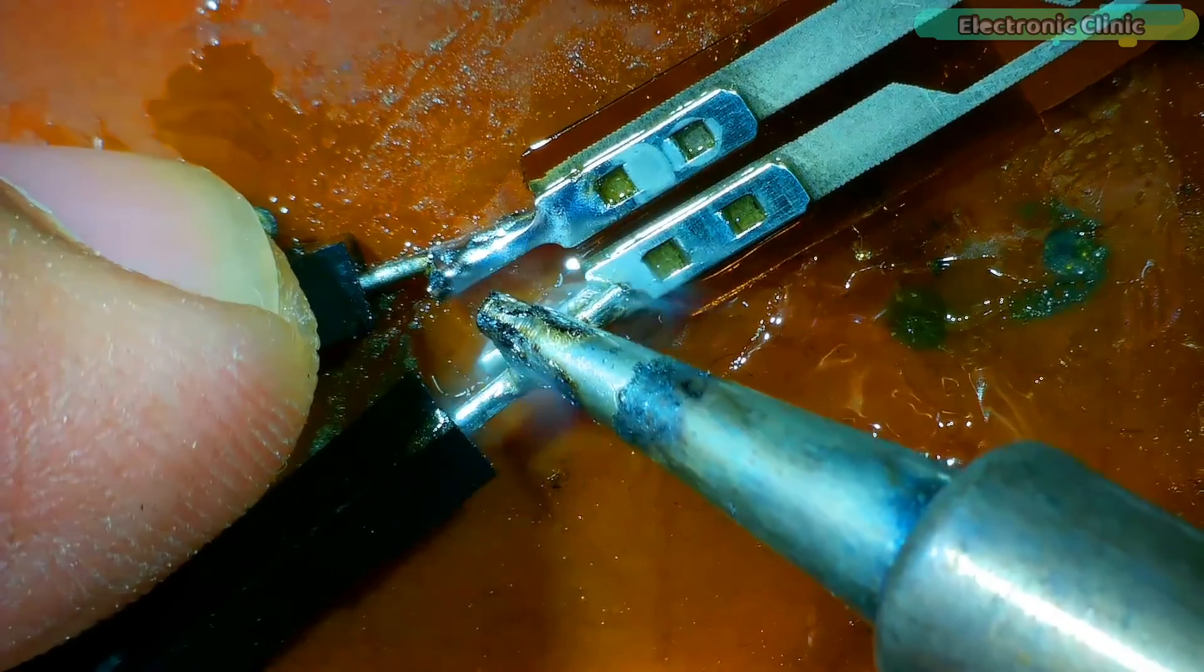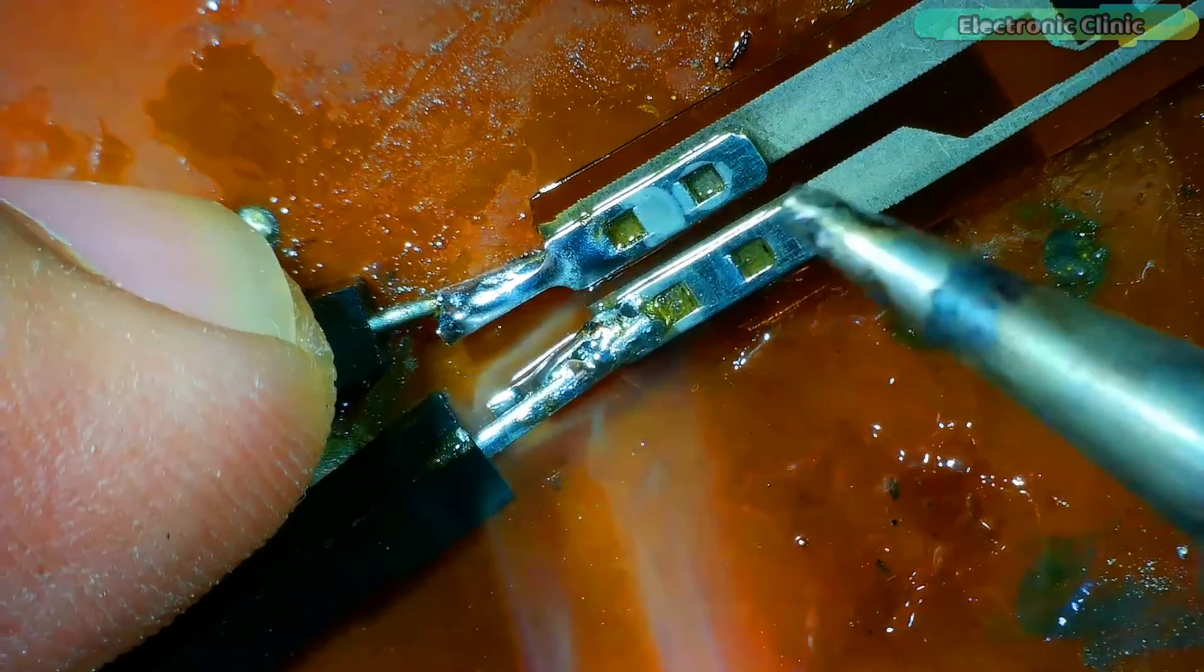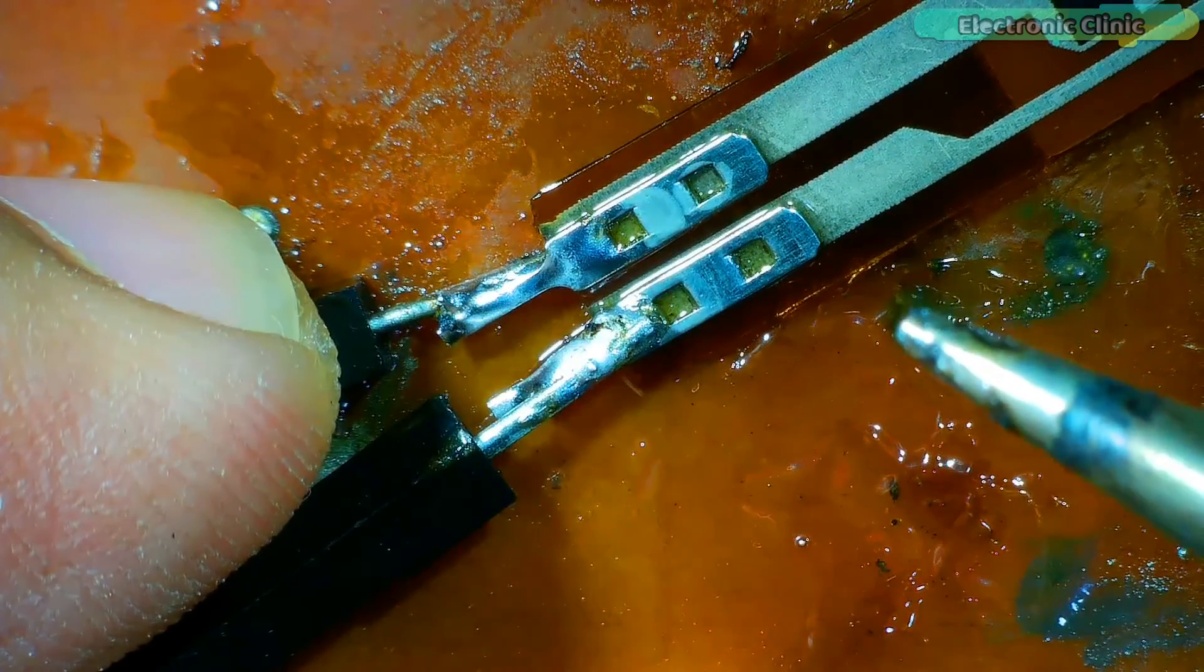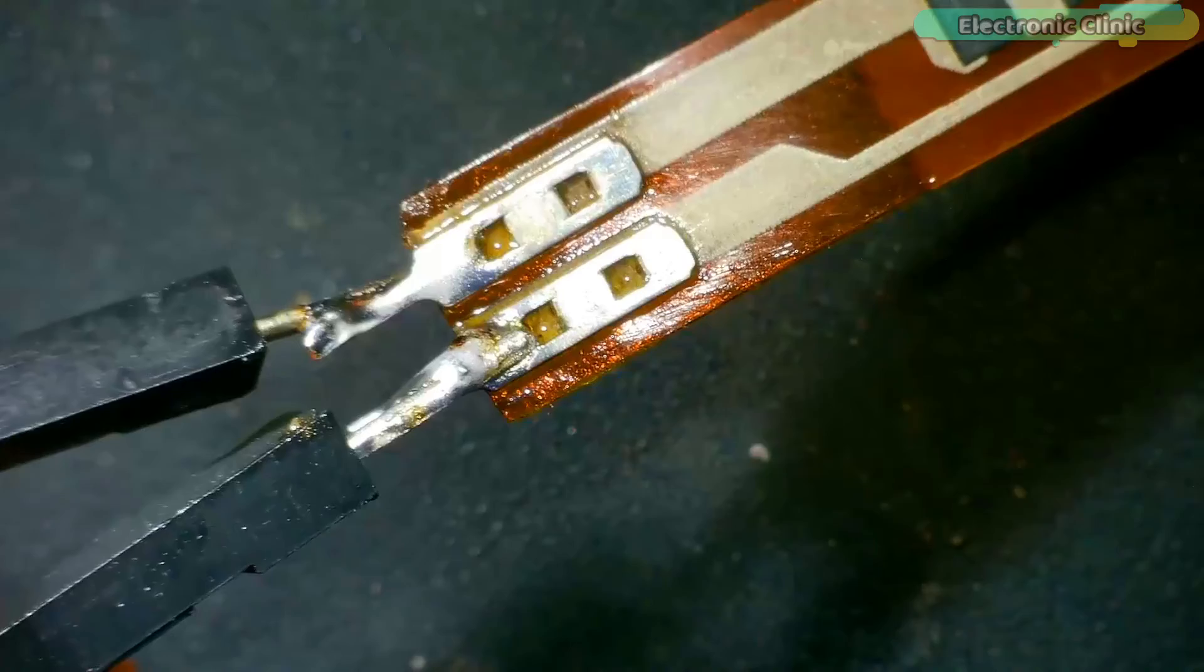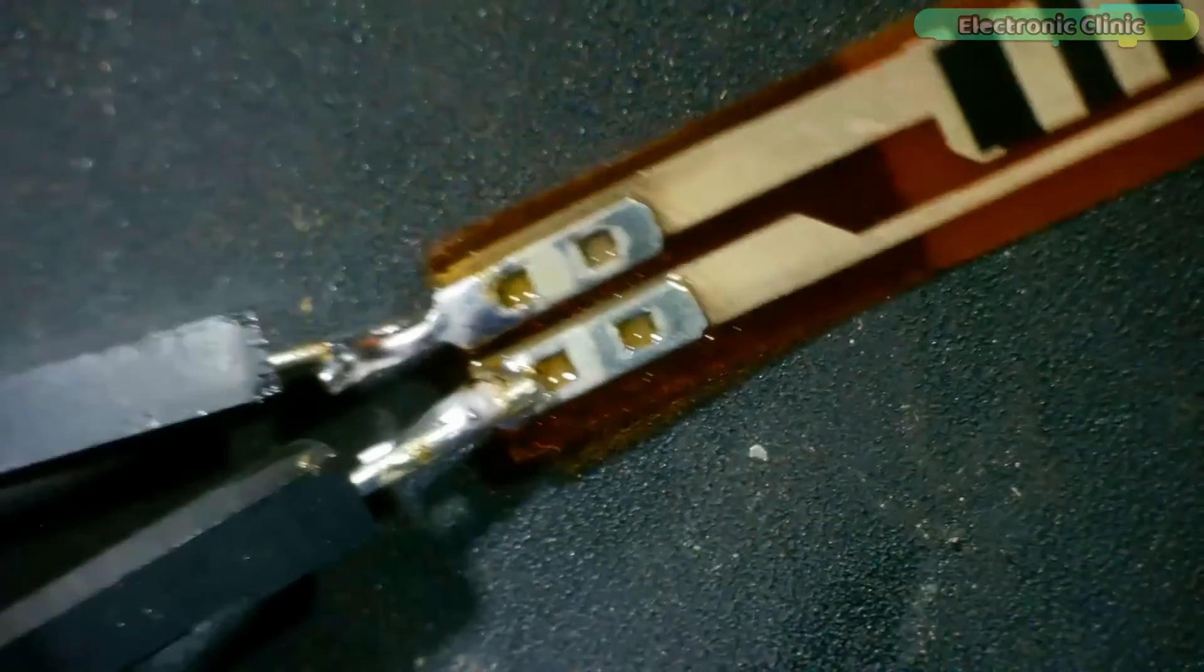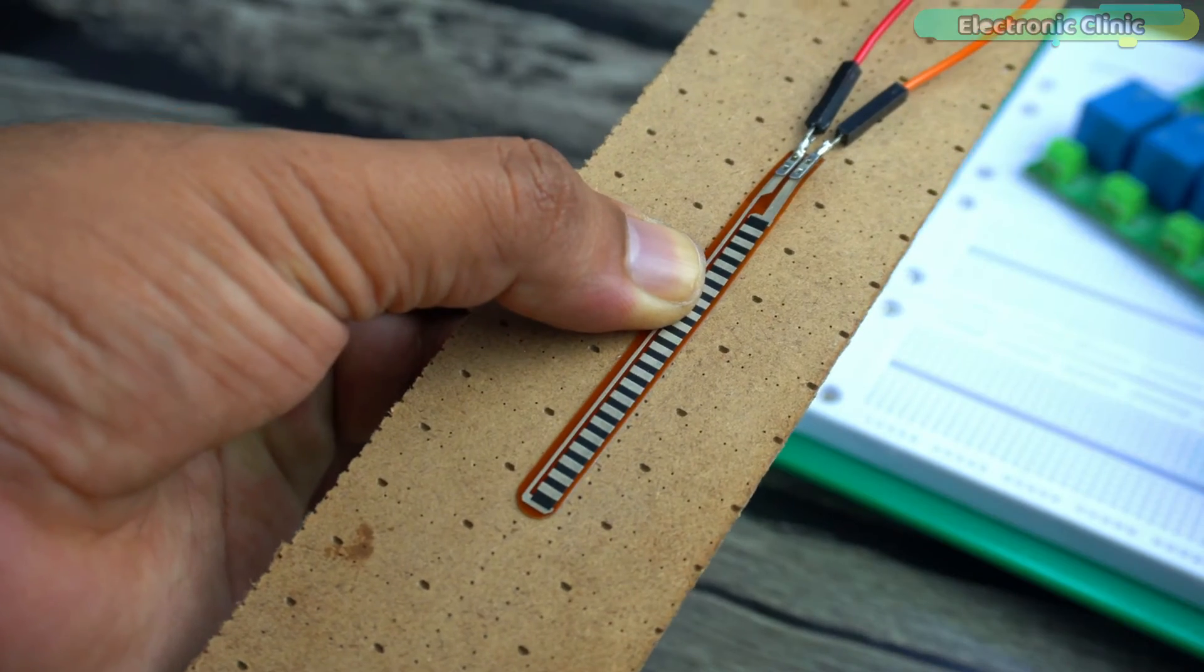While soldering the wires, make sure not to apply too much heat, because this might easily damage the flex sensor. The two wires are soldered, and now let's attach the flex sensor. The flex sensor has been attached.